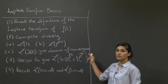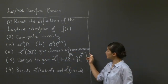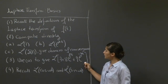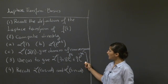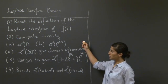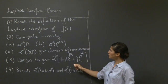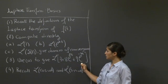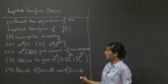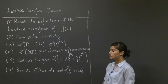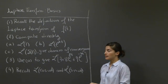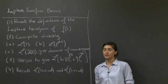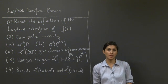For each one of these, give the domain of definition or convergence of the integral. For the last question, you're asked to use the results of question 2 to give the Laplace transform of a linear combination of functions. And the last part, you're asked to compute the Laplace transform of cosine and sine. So why don't you pause the video, take a few minutes, and work through that.